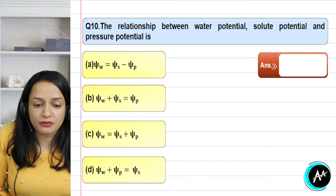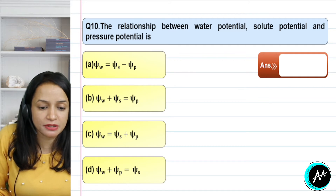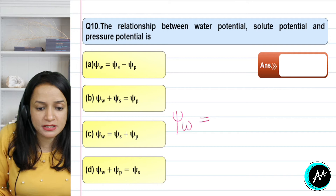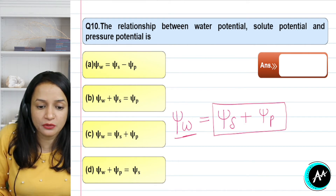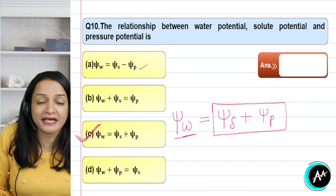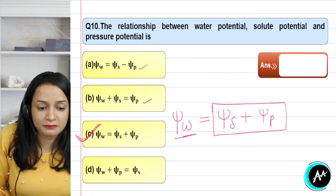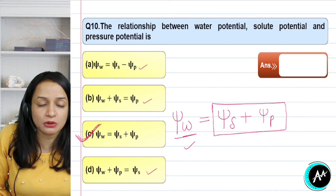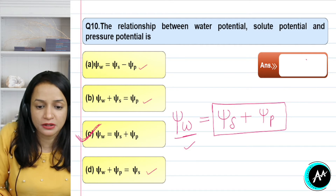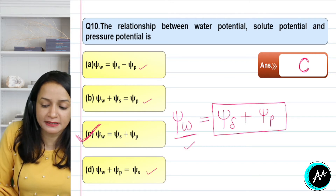Question 10: the relationship between water potential, solute potential, and pressure potential. Water potential is always equal to solute potential plus pressure potential — it is the sum of both. Option A has a negative sign which is not correct; option B is wrong; option D is also incorrect by calculation. The correct formula is: water potential = solute potential + pressure potential. The correct answer for question 10 is option C.